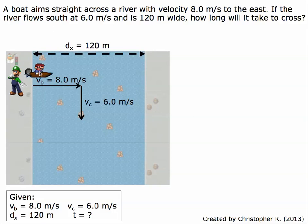So here we have Mario, he's going 8 meters per second. The current is going south at 6 meters per second, and the width is 120 meters. The question is, how long is it going to take Mario to go across?